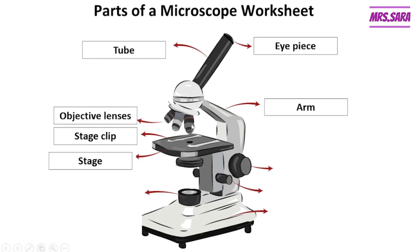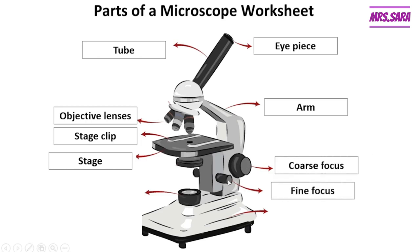These are the objective lenses, Primary Six. We have low power and high power objective lenses. We also have the coarse focus and the fine focus. We move or rotate them to see a clear image of the slide we put on the stage.